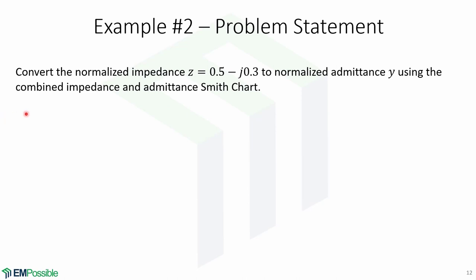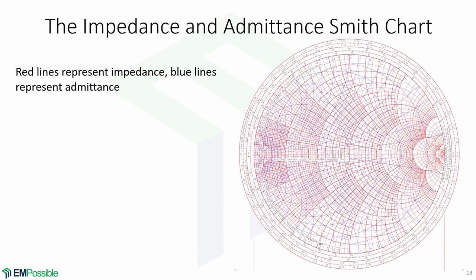This is another example using the combined impedance and admittance Smith chart. Convert the normalized impedance z = 0.5−j0.3 to normalized admittance y. Here is a combined impedance and admittance Smith chart, where the red lines represent the impedance Smith chart and the blue lines represent admittance. Recall that the admittance Smith chart is just a rotated version of the impedance Smith chart. By overlaying them both, we can make impedance and admittance calculations much easier. It may be confusing at first, but once you learn to handle the combined Smith chart, making complex calculations will be very easy.